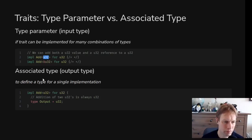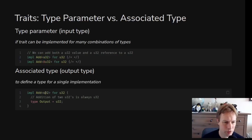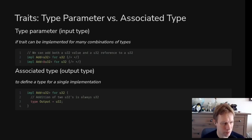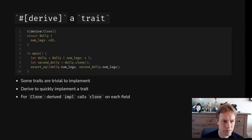If there should only be one implementation for a given type, use an associated type — the 'type Output = ...' syntax inside the trait. It took me a long time to get my head around this. Essentially: if a u32 could add to a u64, or u32, or u128, that's going to be a type parameter. Whereas if, given these two types, we know there's only one correct output type — or at least only one implementation makes sense — use an associated type. In practice it can be difficult to decide, so try it out and switch if needed.